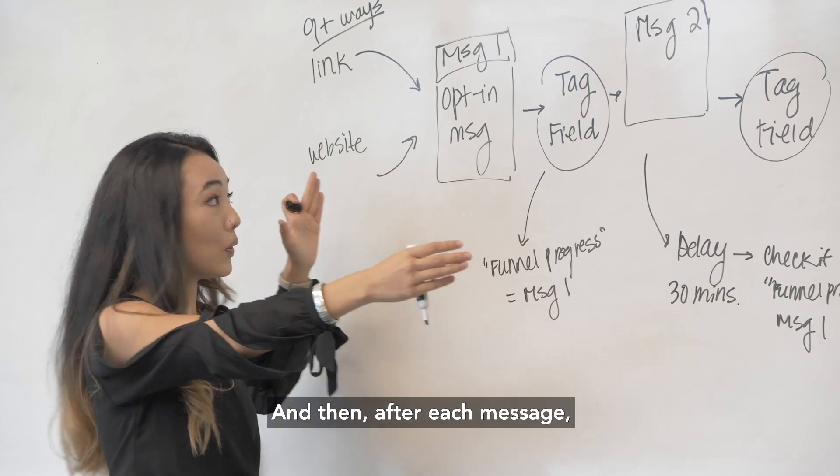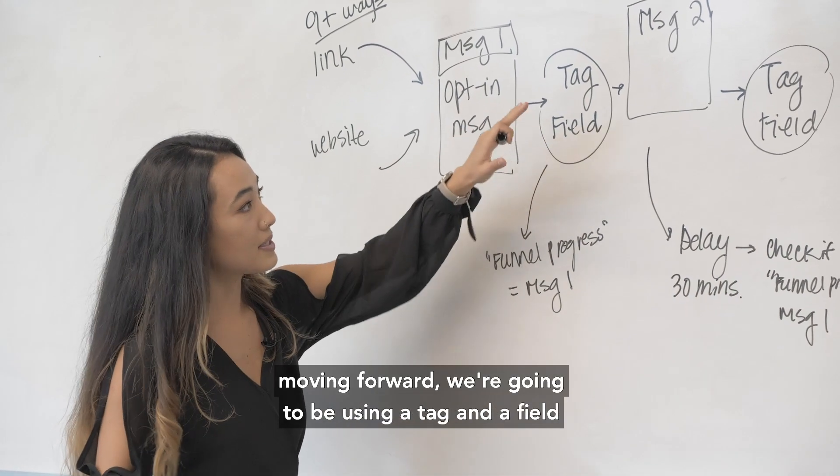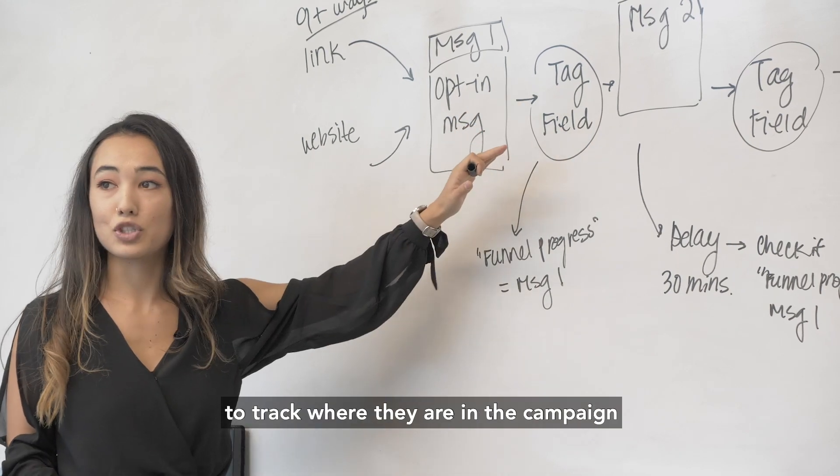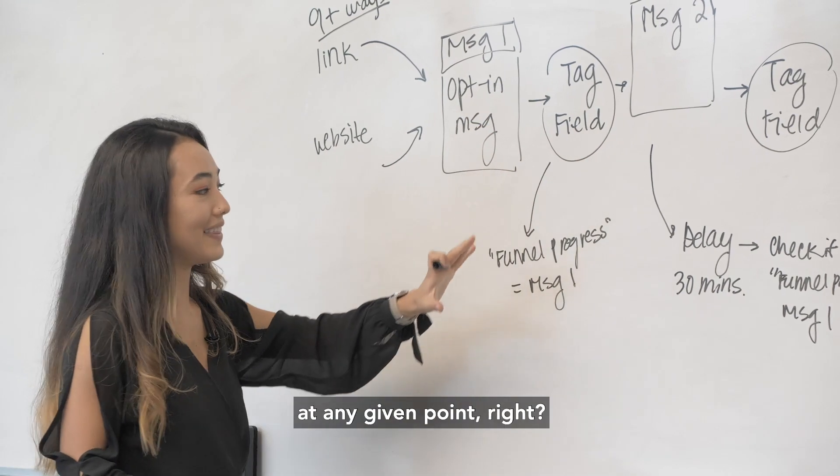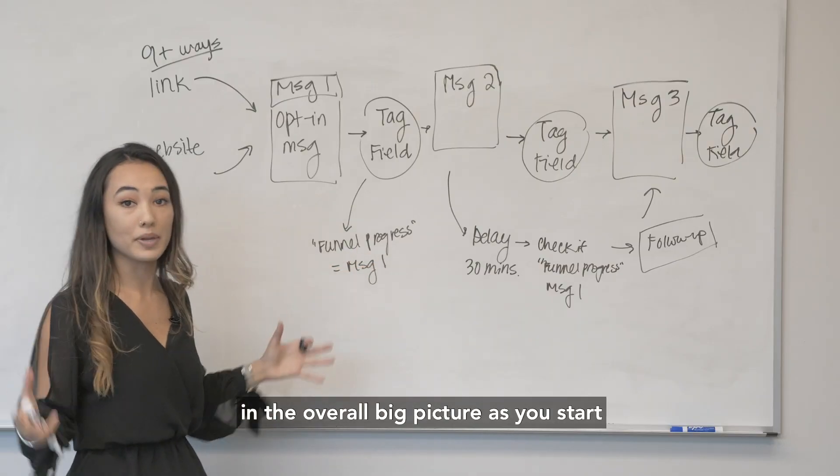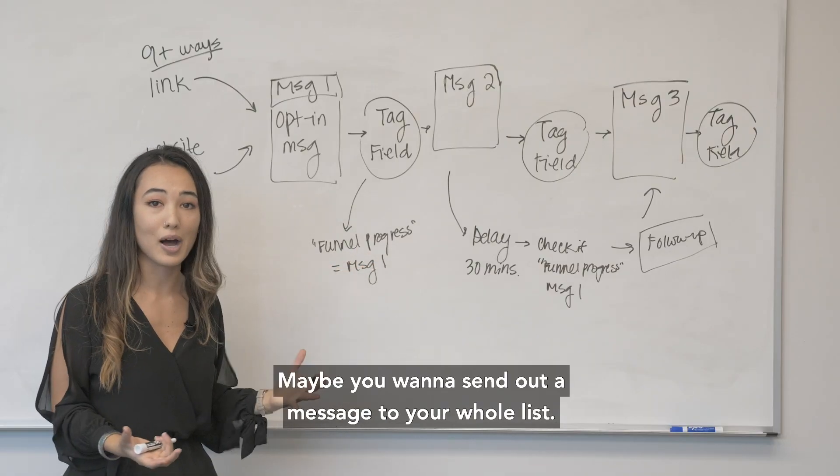From there we're going to send them to an opt-in message inside of this overall thing called a flow. And then after each message moving forward we're going to be using a tag and the field to track where they are in the campaign at any given point. This is also important for the overall big picture as you start to do more inside your bot.